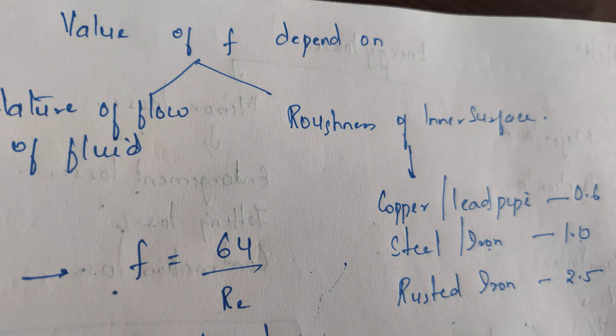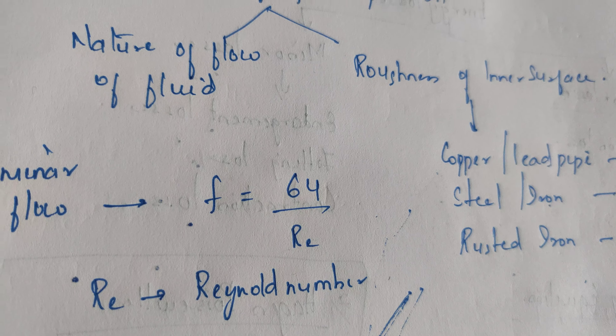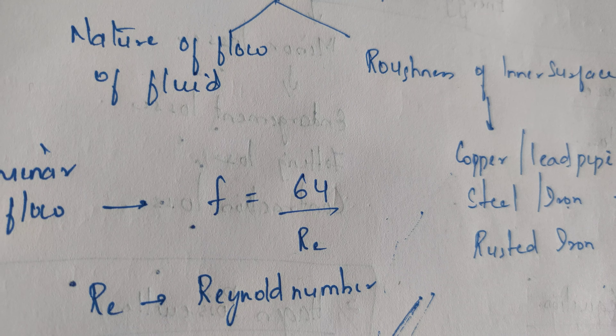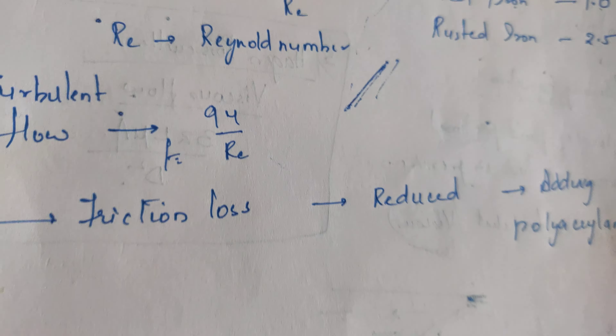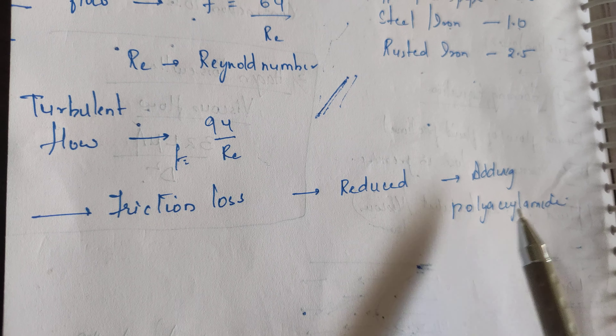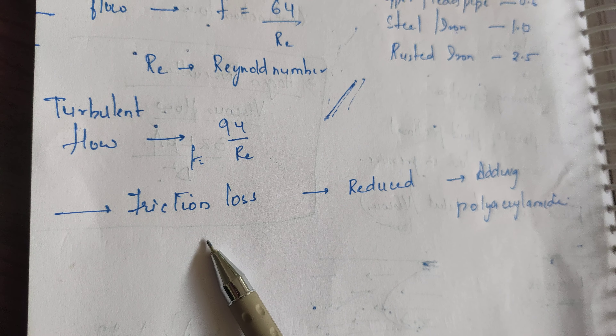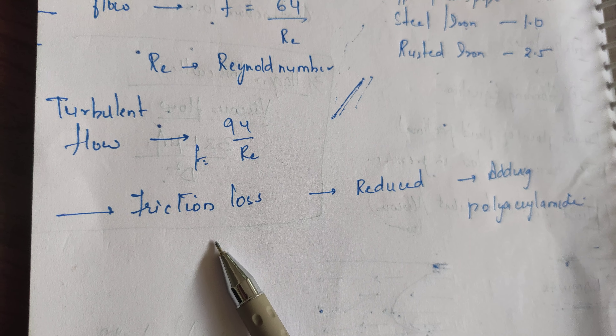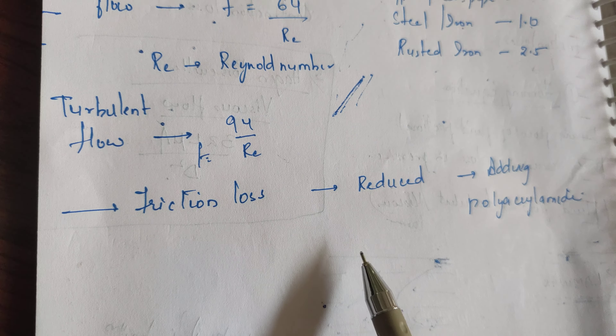Frictional loss — that is, loss of pressure and velocity due to friction — can be reduced by adding a polymer called polyacrylamide. By adding polyacrylamide, we can reduce friction loss and maintain the velocity and pressure in the pipelines.